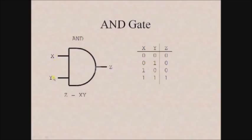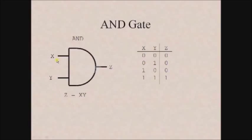The next gate is the AND gate. This is the symbol used for representing an AND gate — it is a gate which accepts more than one input and provides only one output. Here x and y are the two inputs and z is the output. The AND gate output is 1 only when all input variables are logic 1. You can see in the truth table that z becomes 1 only when both x and y are 1. The expression for AND gate is z equals x·y.